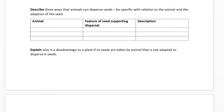Three ways animals can disperse seeds — be specific in relation to the animal and the adaptation of the seeds. You could go with hooks. For example, a feature of the seed supporting dispersal would be hooks on the seed that latch onto an animal's fur, such as a dog. Those hooks are dry and catch onto the fur, allowing the seed to be transferred over a large region.